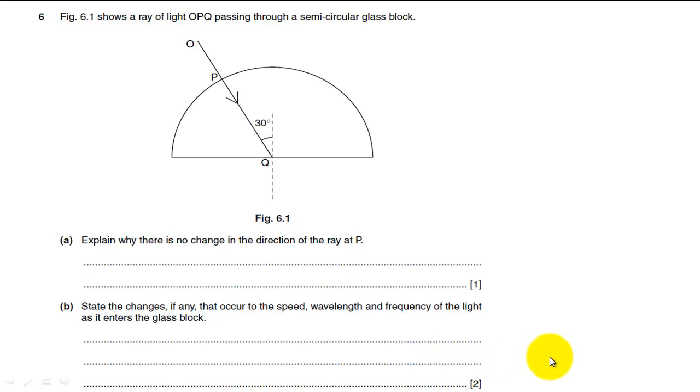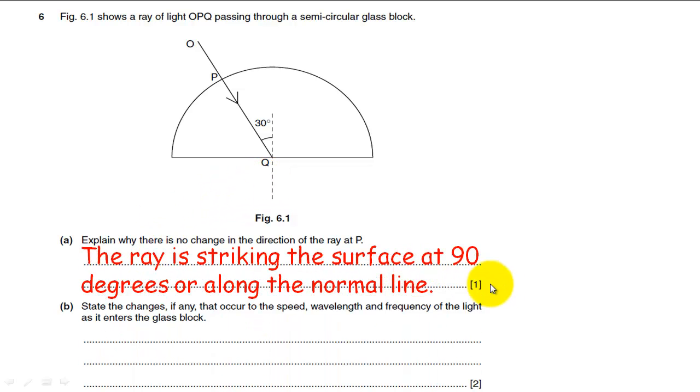Take a moment to read this question and attempt it if you can. So now we've got a ray coming in OP through here. Explain why there's no change of direction of the ray at P. Well, basically it's striking the surface at 90 degrees. I get my students to imagine sometimes a car coming in, both wheels would get stuck in the mud or the optically dense material, they'd slow down at the same time. So you don't get a change of direction when you strike the surface at 90 degrees. The ray is striking the surface at 90 degrees along the normal line, so you don't get any refraction.